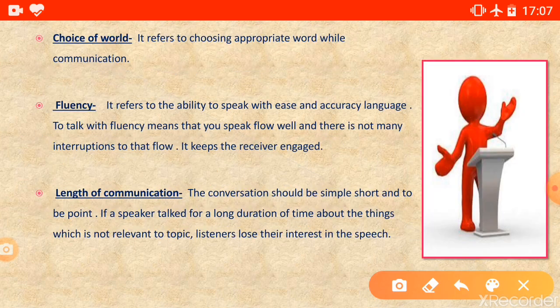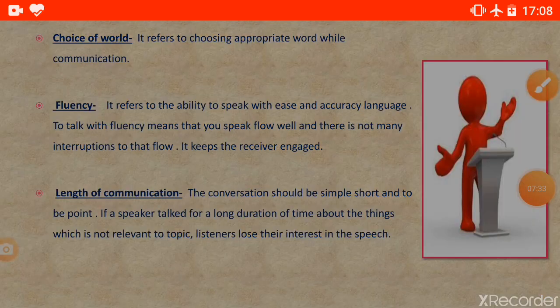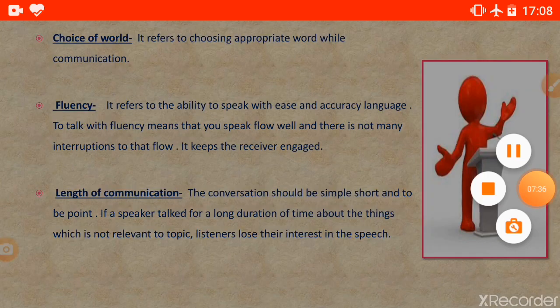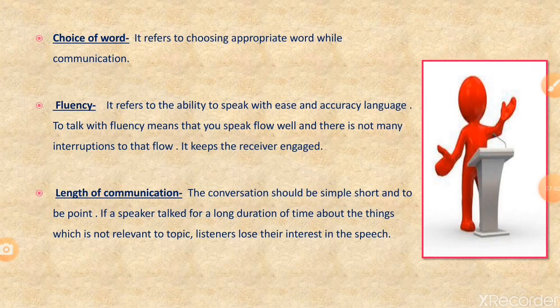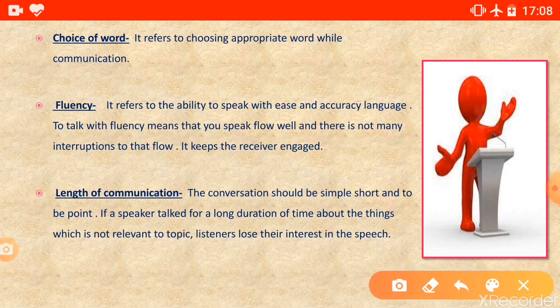The fourth factor is choice of words — it refers to choosing words appropriately while communicating. When we use oral communication, we should try to choose our words appropriately. The fifth factor is fluency — it refers to the ability to speak with ease and in accurate language. When involved in oral communication, our flow should be maintained.